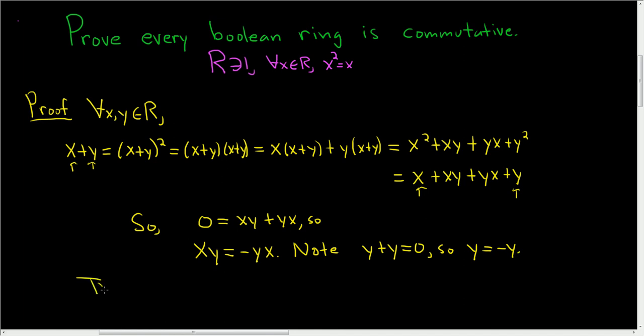So then, if we look at xy, well, that's minus yx. We can write that as minus y times x. And minus y is equal to y, so this is yx. So we've shown that xy is equal to yx for all x, y in our ring R.